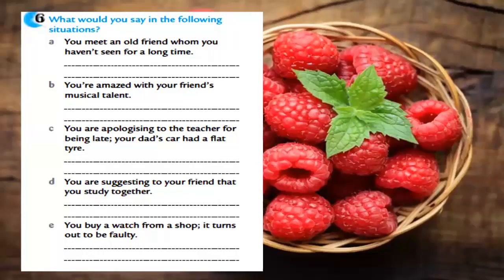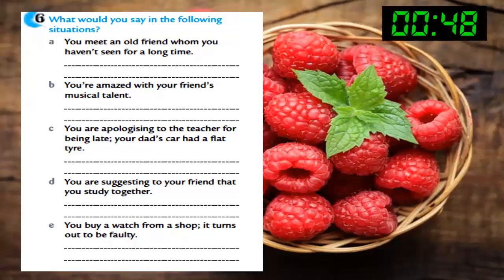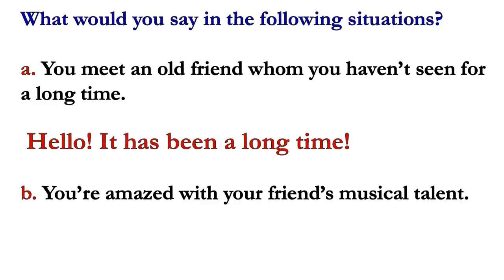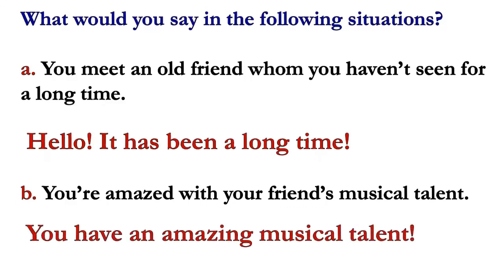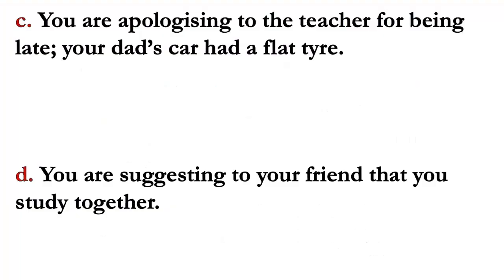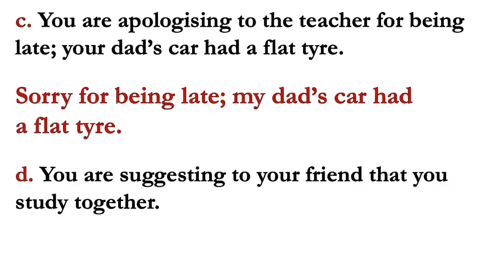What would you say in the following situations? Let's check the answers for this exercise. What would you say: A, you meet an old friend whom you haven't seen for a long time. You can say, hello, it has been a long time. B, you're amazed with your friend's musical talents. You can say, you have an amazing musical talent. C, you are apologizing to the teacher for being late. Your dad's car had a flat tire. You can say, sorry for being late. My dad's car had a flat tire.